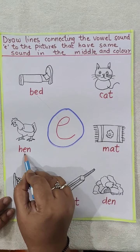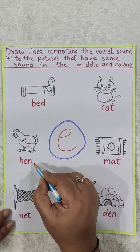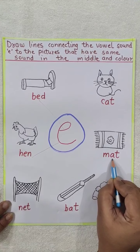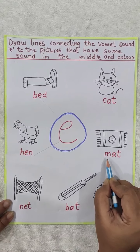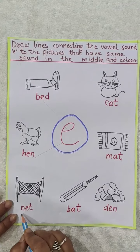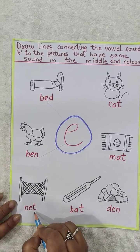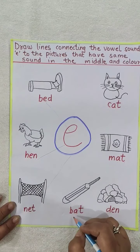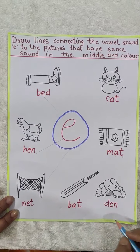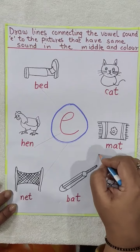Hen — H-E-N, e is in the middle, so we will match it. M-A-T, mat — e is not here, so we will not match it. N-E-T, net — e is in the middle, so we will match this. B-A-T — there is no e here, so we will not match it. D-E-N, den — e is in the middle, so we will match this.